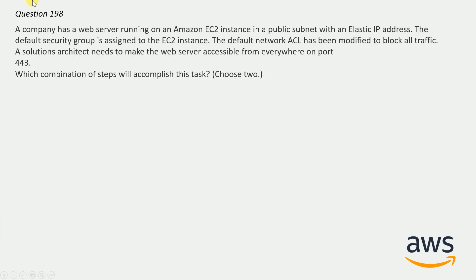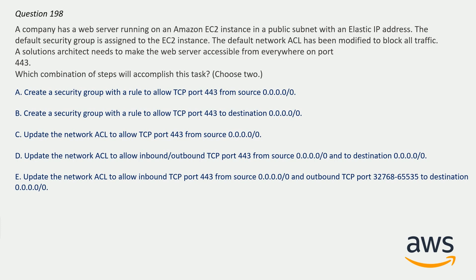Question number 198: A company has a web server running on an Amazon EC2 instance in a public subnet with an elastic IP address. The default security group is assigned to the EC2 instance. The default network ACL has been modified to block all traffic. A solution architect needs to make the web server accessible from everywhere on port 443. Choose two. The correct options are A and E: Create a security group with a rule to allow TCP port 443 from source 0.0.0.0/0, and update the network ACL to allow inbound TCP port 443 from source and outbound TCP to the destination.